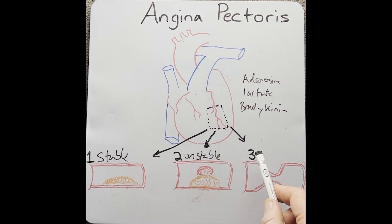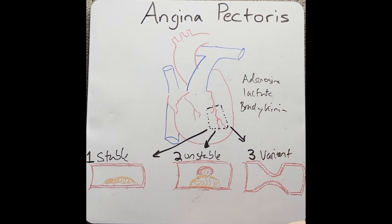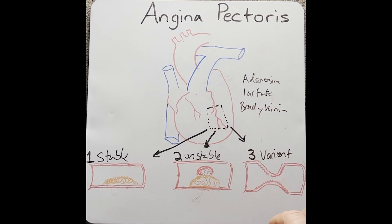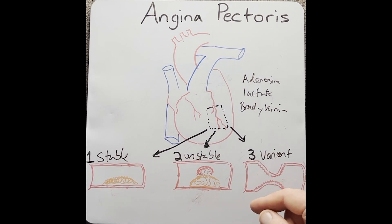Finally, number three is Prinzmetal or variant angina. This is associated with a vasospasm in the coronary artery, which is usually located near atherosclerotic plaque. This spasm will be relieved by nitroglycerin, which takes away the chest pain.